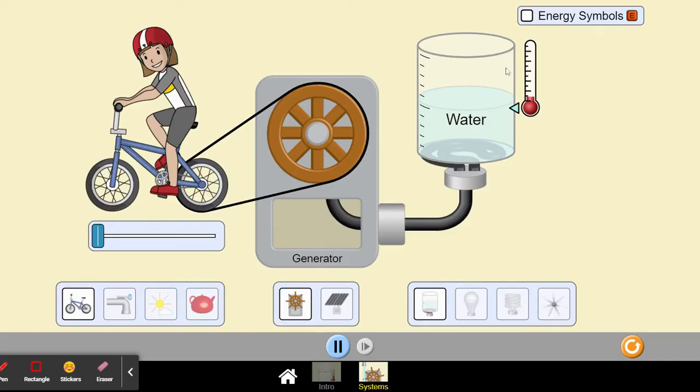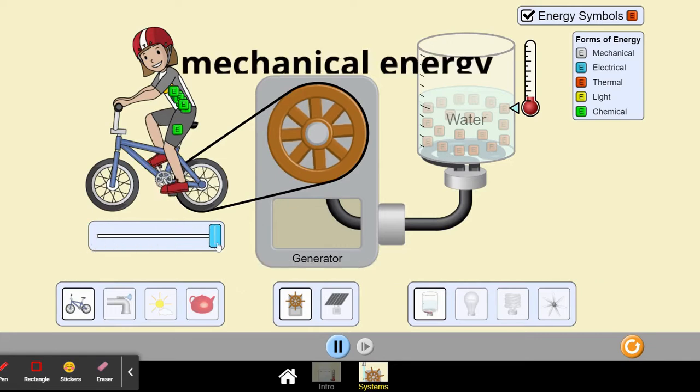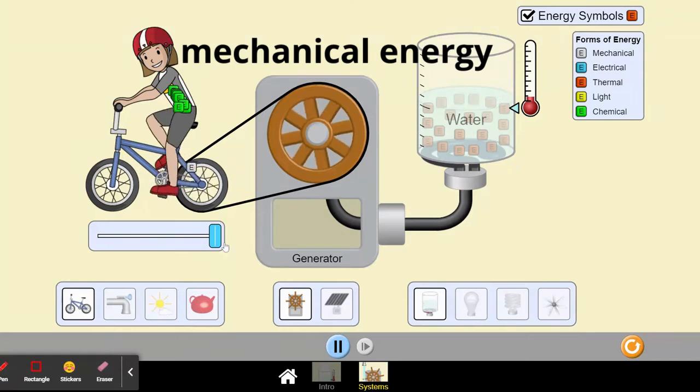Here is an example of multiple transformations of energy. Chemical energy from food is transformed into mechanical energy. You can see these gray boxes, this is the mechanical energy.